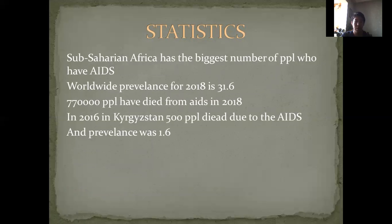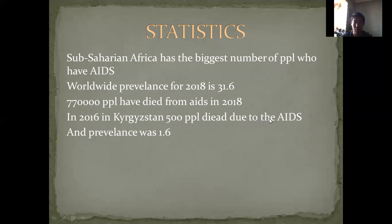Sub-Saharan Africa has the biggest number of people who have AIDS. The worldwide prevalence for 2018 is 31.6 million. And 770,000 people died from AIDS in 2018. In Kyrgyzstan in 2016, 500 people died due to AIDS, and the prevalence for that time was 1.6.